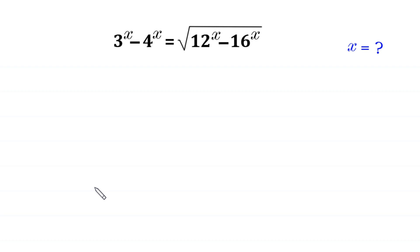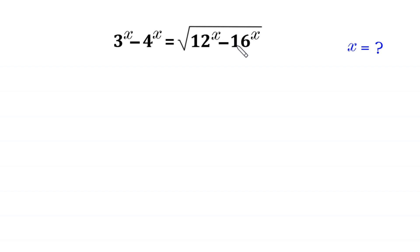Hello, welcome to how to solve this very nice exponential equation. 3 to the power x minus 4 to the power x is equal to the square root of 12 to the power x minus 16 to the power x. We need to find all possible values of x.